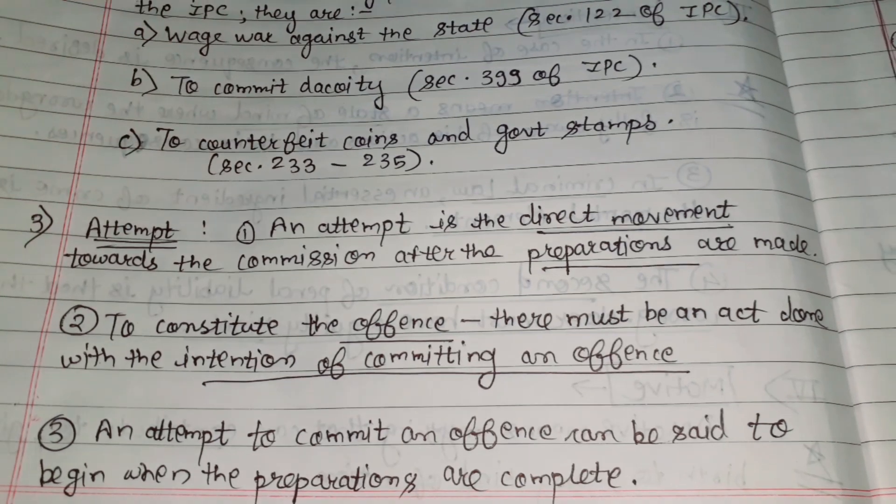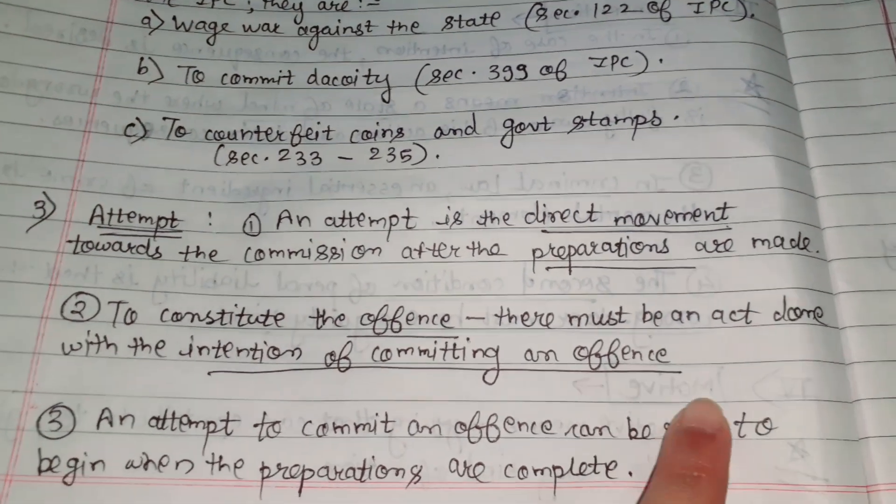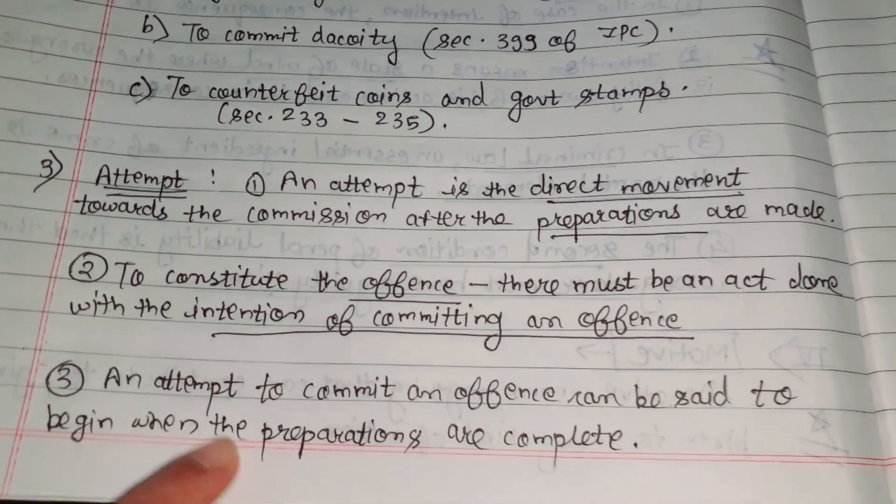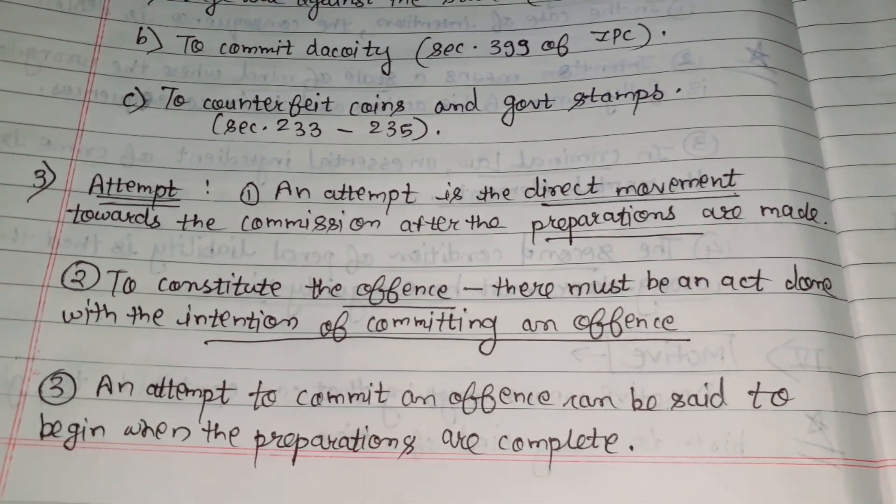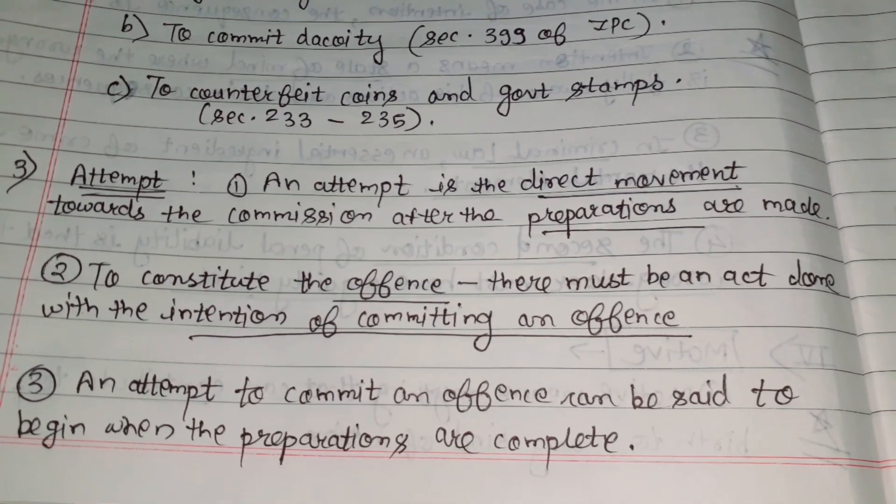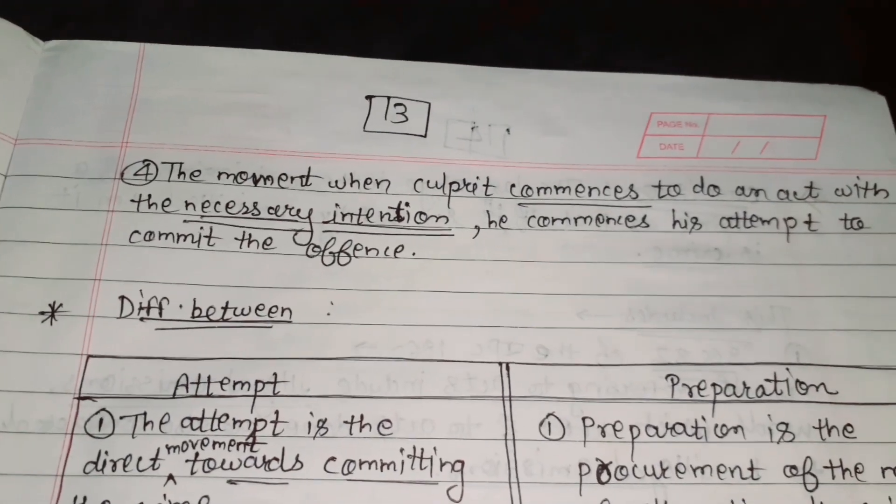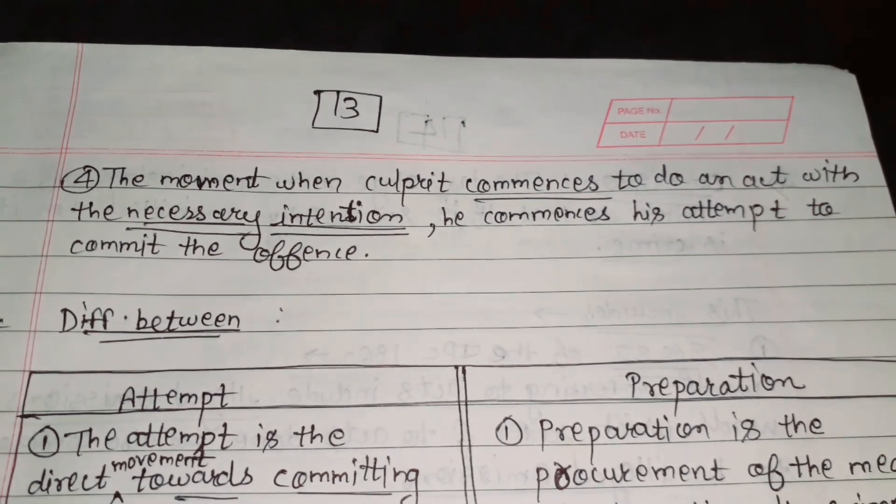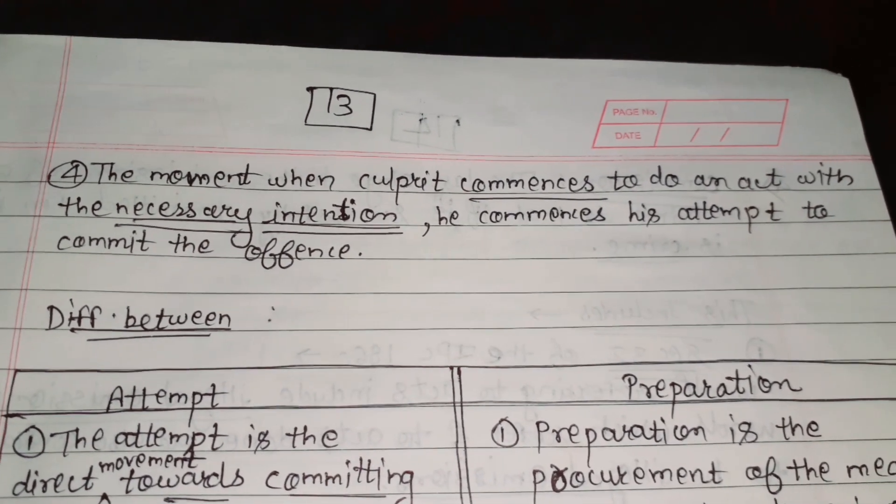Attempt means that person has attempted to do that crime. There must be an act done with the intention of committing an offense. An attempt to commit an offense can be said to begin when the preparations are complete. The moment when the culprit commenced to do an act with the necessary intention, he commenced his attempt to commit the offense.